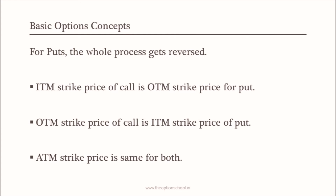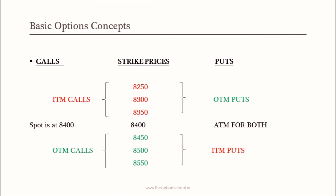In this screen, the spot is again at 8400. We have three strike prices below spot — 8250, 8300, and 8350 — and three strike prices above spot. On the left hand side we are talking about calls, and on the right hand side we are talking about puts. All the strike prices below spot are in the money calls, and those same strike prices below spot are out of the money puts. The 8400 strike is ATM for both. Strike prices above 8400 are out of the money calls, and those same strike prices above 8400 are in the money puts. So whatever is in the money for calls is out of the money for puts, and whatever is out of the money for calls is in the money for puts, while ATM is the same for both.